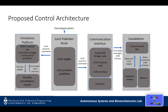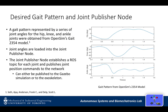Shown here is an overview of our proposed control architecture. The central module is the joint publisher node, which contains the desired gait pattern to be controlled. The gait pattern is represented by a series of joint angles for the hip, knee, and ankle joints, and is obtained from an OpenSim gait model. The gait pattern is loaded into the joint publisher node, and a ROS topic for each joint is established, publishing joint position commands to the network, either for the simulation or the exoskeleton hardware.